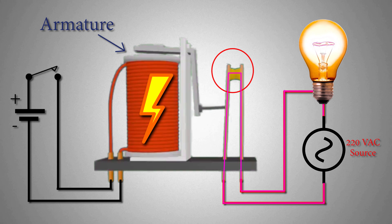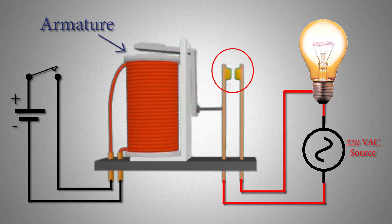When this push button is released, the relay coil gets de-energized and the relay contacts open up, opening the AC circuit and the bulb gets turned off.